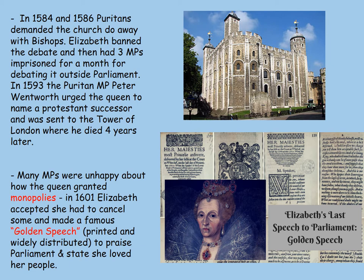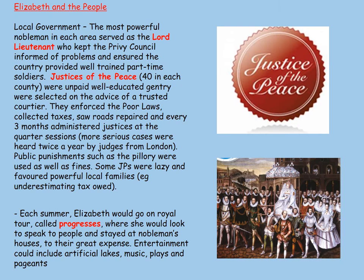In 1601, Elizabeth gave what is called the Golden Speech, where she said she loved Parliament and the people, acknowledging she needed to give wider control to more people. Although widely printed and all about her loving her country, it was perhaps another sign of her losing power. Around the country she relied on powerful noblemen as Lord Lieutenants, and justices of the peace from the well-educated gentry. They were often loyal to her, although some were lazy and favoured powerful local families — for example, not taxing as much as they should.